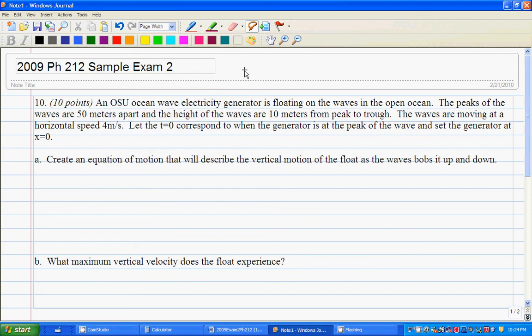Okay, here's another sample problem from that 2009 exam. An OSU ocean wave electricity generator is floating on the waves in the open ocean. Remember that OSU is trying to create these electric generators where waves shake this big vessel, the size of a boat, up and down. You have a mass with a magnet on it that passes through a coil of wires and you get electricity. It's kind of cool. Anyways, we have this generator floating on the waves in the open ocean.